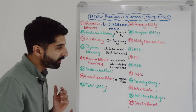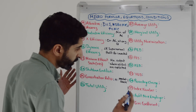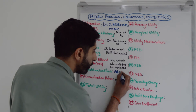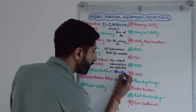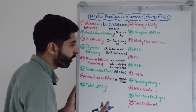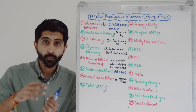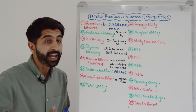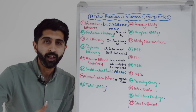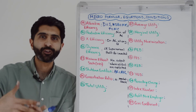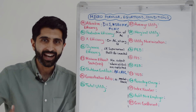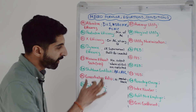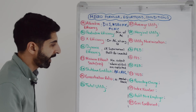The shutdown condition, or the shutdown price, occurs when average revenue is equal to average variable cost. If a firm is operating where AR is less than AVC, that firm should shut down. But if AR is greater than AVC, they should continue operating in the short run.